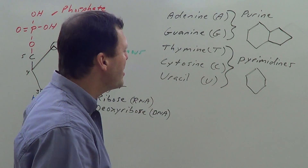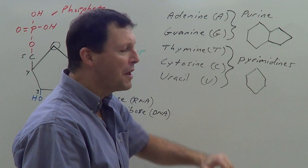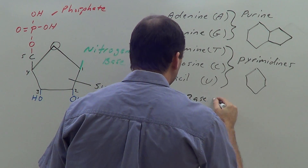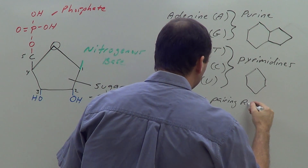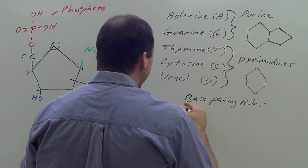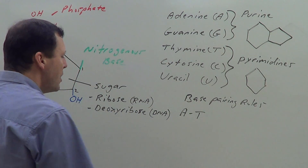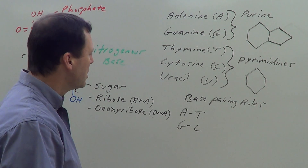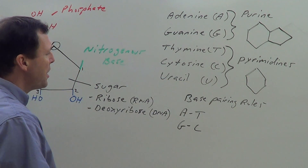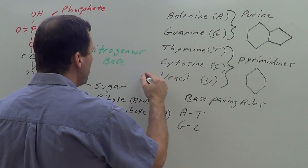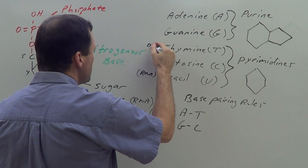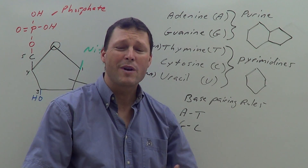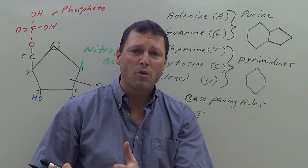In DNA, purines and pyrimidines like to pair up via hydrogen bonds — a purine always pairs with a pyrimidine. The base pairing rules are: adenine pairs with thymine, and guanine pairs with cytosine. Uracil is only found in RNA, while thymine is only found in DNA. We'll discuss this more when we cover DNA replication, transcription, and translation.